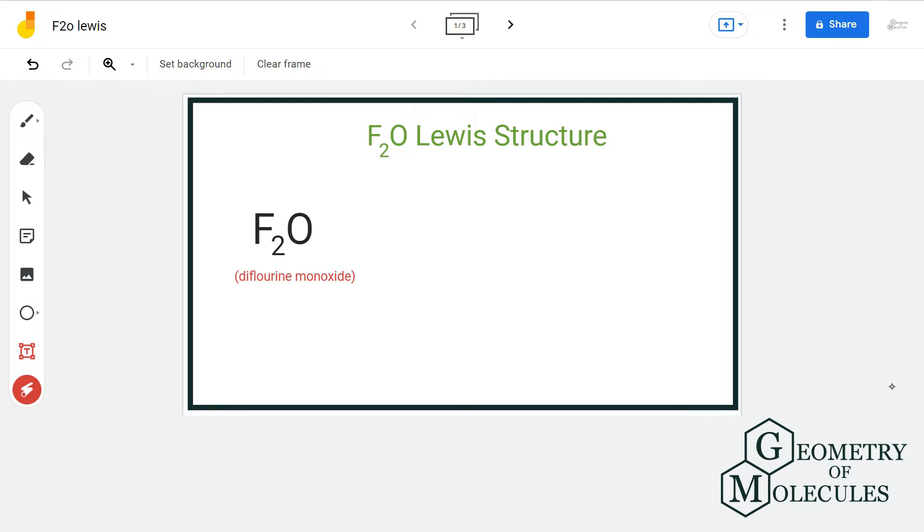Hello guys, welcome back to our channel. In this video we will discuss the Lewis structure of F2O, the chemical formula of difluorine monoxide. For that, let us count the total number of valence electrons. We have one